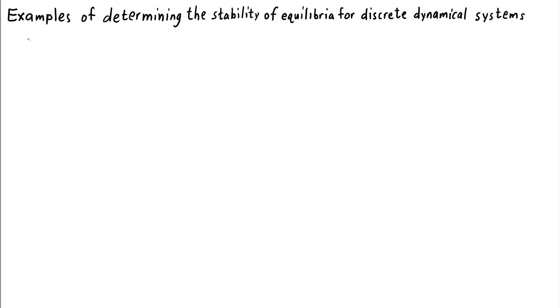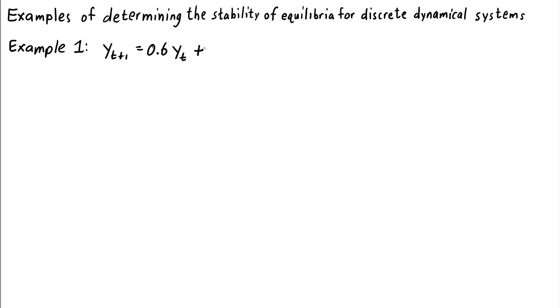Let's look at some examples of how to analytically determine the stability of equilibria for discrete dynamical systems. For the first example, let's look at the simplest possible case: a linear dynamical system of the form y(t+1) = 0.6·y_t + 2.